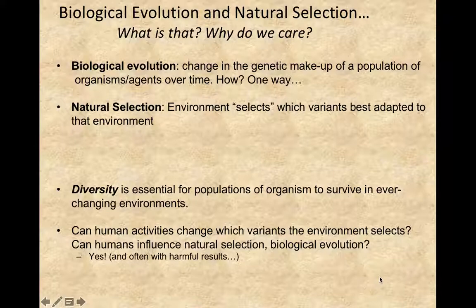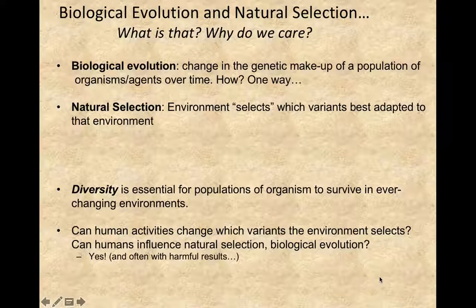In natural selection, the environment selects which variants in a population are best adapted to survive. Those organisms have better survival, they have more offspring, and their specific group of genes is passed on. Over time, this changes the genetic makeup of that population, and they'll be better adapted to an ever-changing environment. Genetic diversity is essential for populations to survive because our environment is constantly changing.